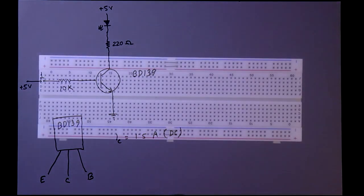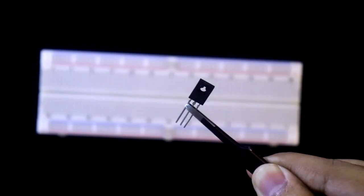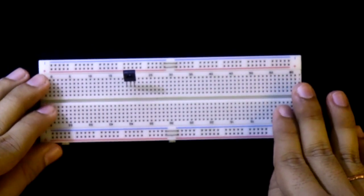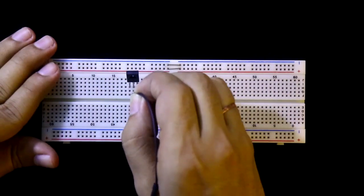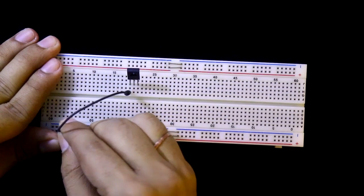Now I will make this circuit on the breadboard. Here's the transistor. Its emitter is connected to the ground.